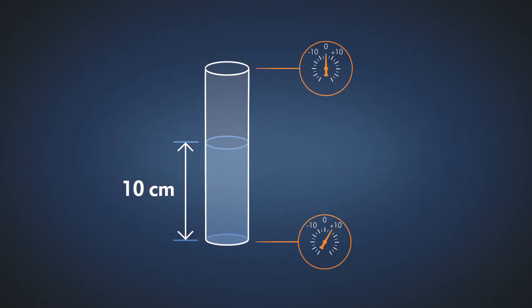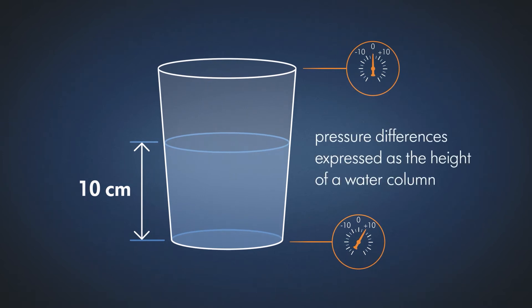Pressure differences can therefore also be expressed as the height of water column measured in centimeters of H2O.